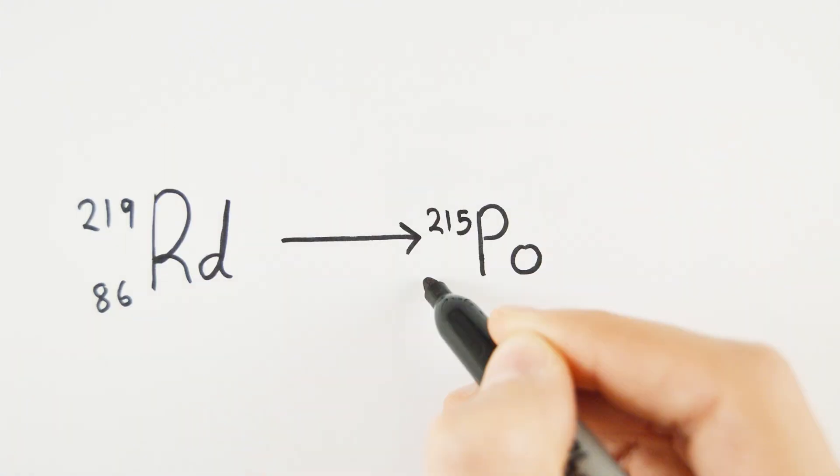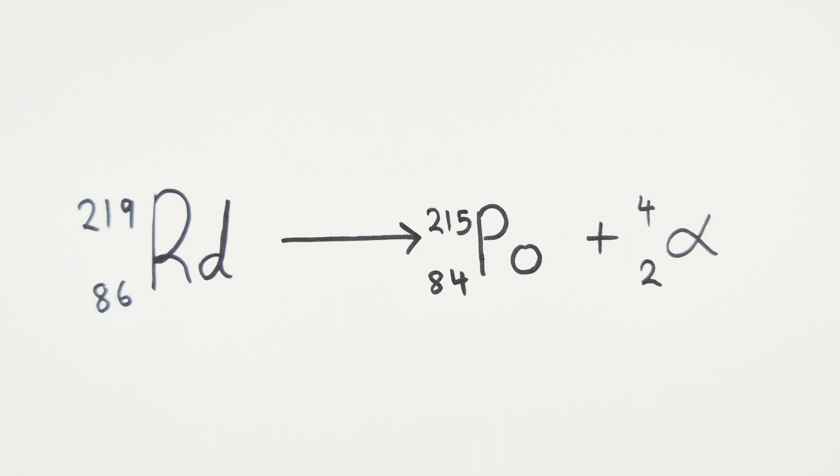For example, radon-219 would decay into polonium-215 and emit an alpha particle in the process. This is represented in an equation like this.